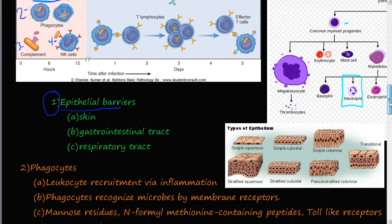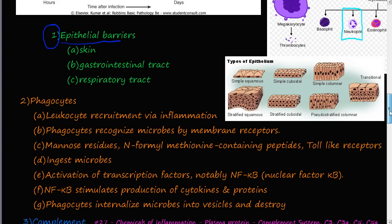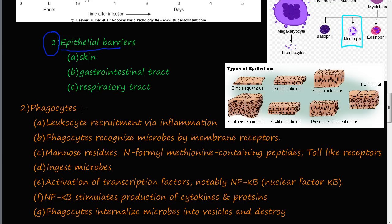Now let's talk about phagocytes. If a microbe has entered our body and is causing a problem, first there is leukocyte recruitment via inflammation. Next, phagocytes recognize microbes by membrane proteins — specific flags on the microbe that are not self. There are three types of flags: mannose residues (sugar residues), N-formyl methionine-containing peptides, and toll-like receptors. The phagocytes recognize these flags and are triggered to ingest the microbe.